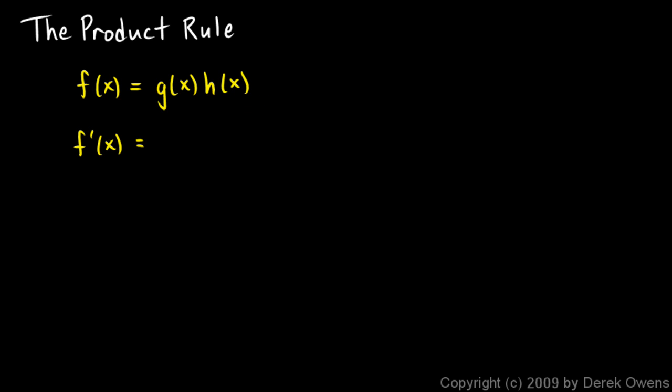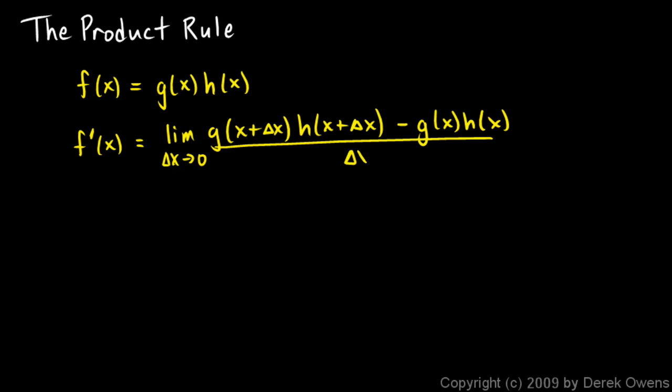According to the definition of a derivative, f primed, the derivative of f, will be the limit as delta x approaches 0 of g of x plus delta x times h of x plus delta x minus function g times function h, and all of that over delta x.